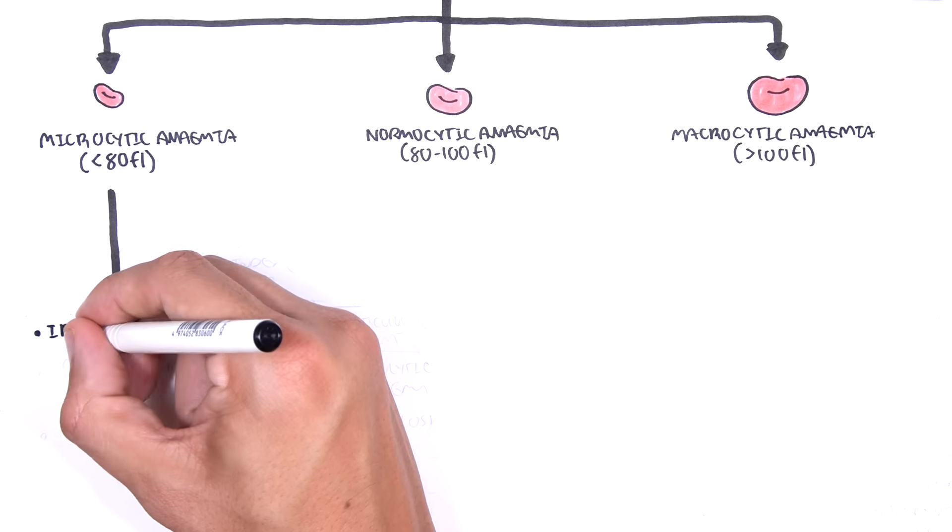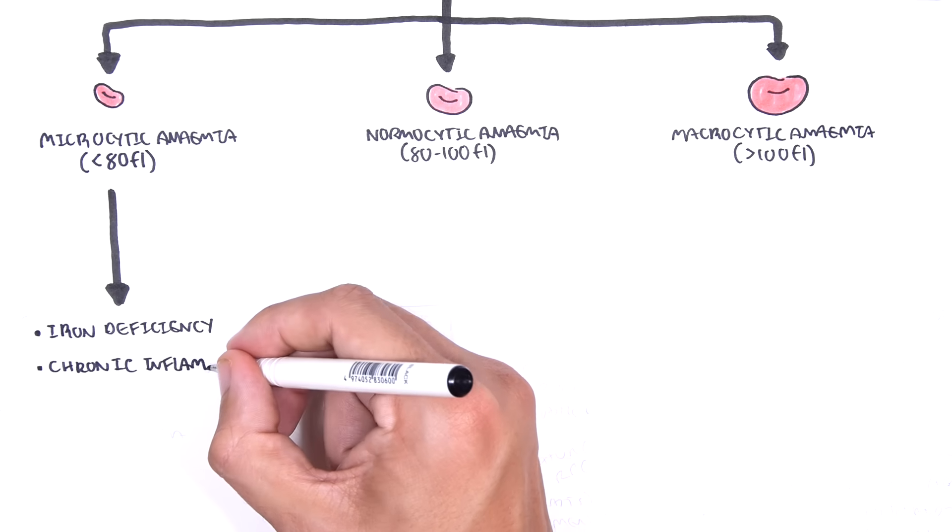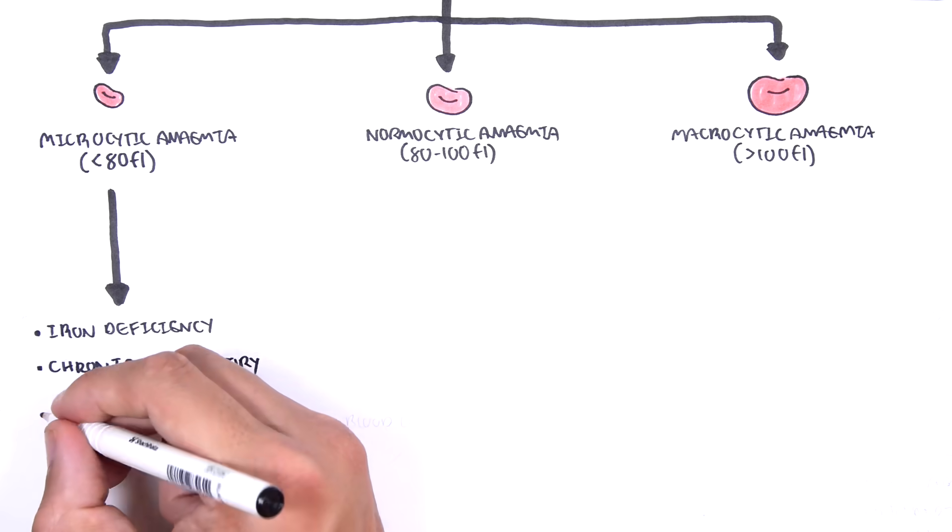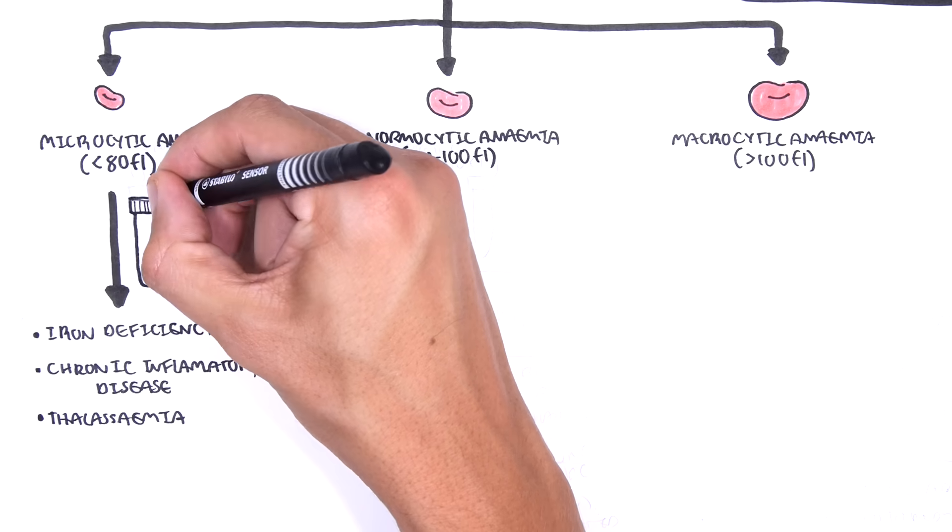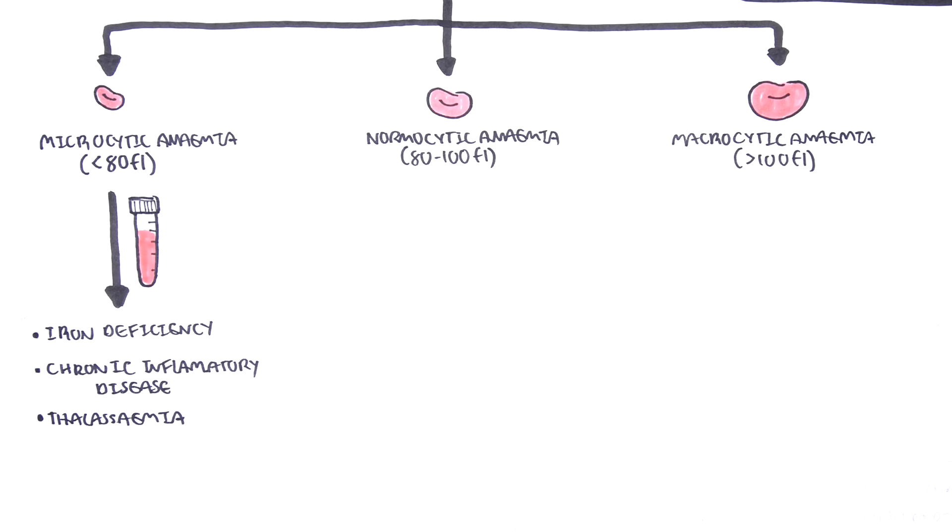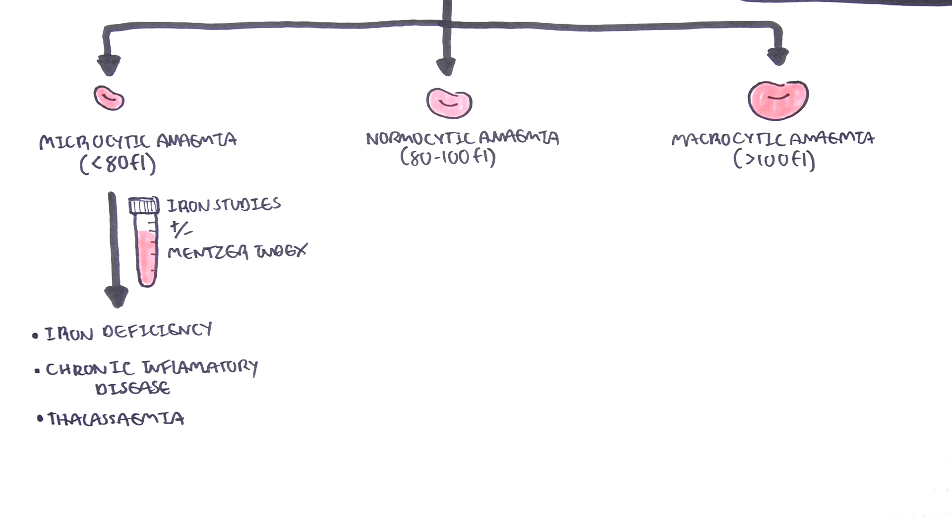Causes of microcytic anemia include iron deficiency, chronic inflammatory disease, and thalassemia. Investigations that should be performed in this context include iron studies and then calculating the Mentzer index, which is helpful in differentiating iron deficiency anemia from beta thalassemia.